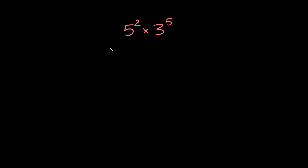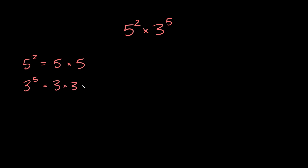So 5 squared — let's just write it out. 5 squared is the same thing as 5 times 5. And 3 to the 5th is the same thing as 3 times 3 times 3 times 3 times 3.